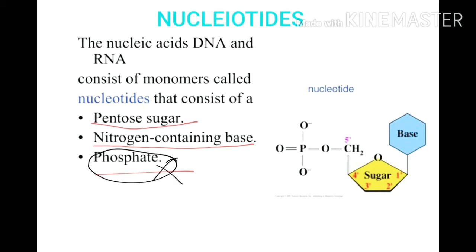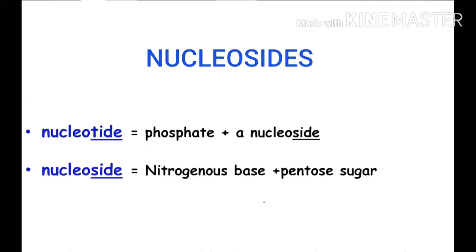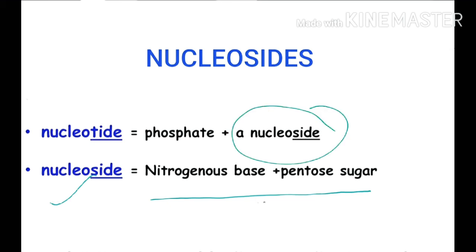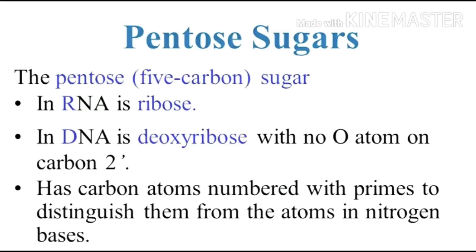If you remove the phosphate group from a nucleotide, then the pentose sugar and nitrogenous base form the nucleoside. So a nucleoside is made of pentose sugar and nitrogenous base. And if you combine a phosphate group with a nucleoside, then it becomes a complete nucleotide.